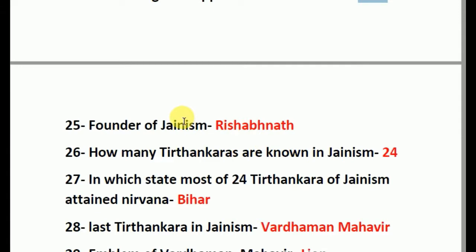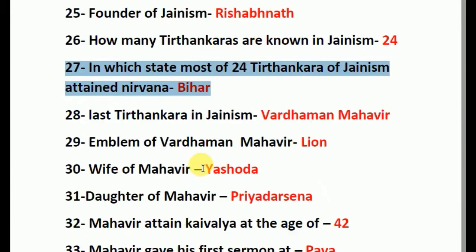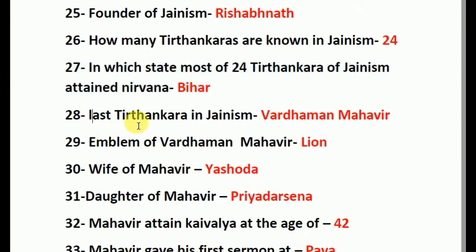Founder of Jainism: the answer is Rishabhanath. How many Tirthankaras are known in Jainism? The answer is 24. In which state did most of the 24 Tirthankaras of Jainism attain Nirvana? The answer is Bihar. It is a very important question. The last Tirthankara in Jainism is Mahavira.